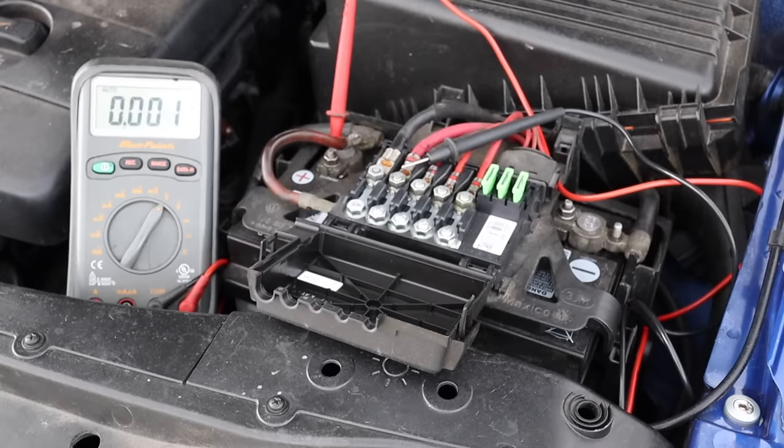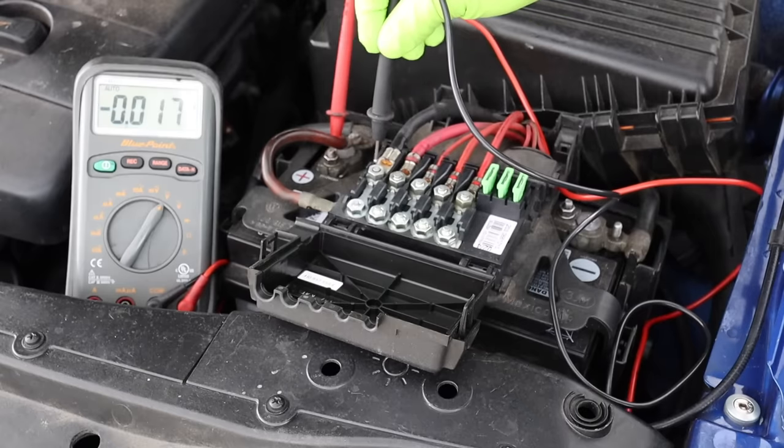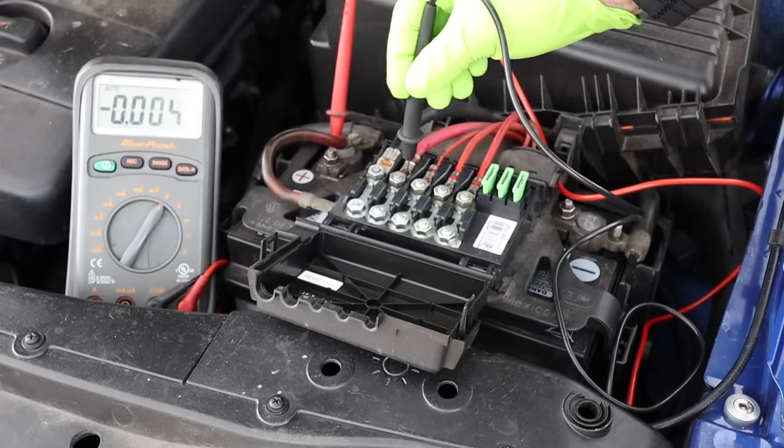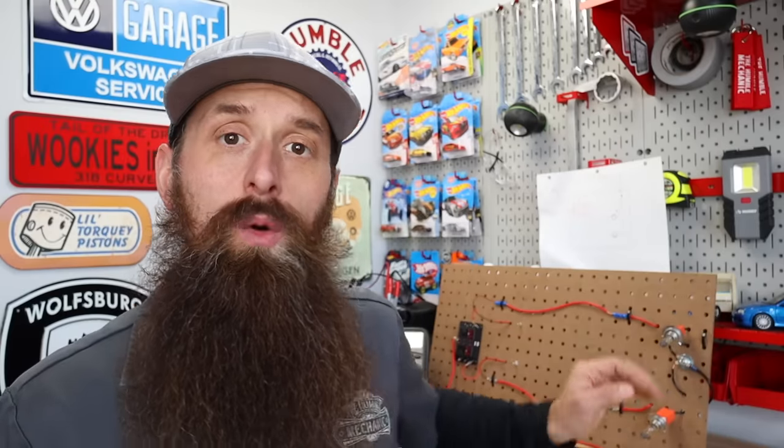What we really want to do is we want to be testing these circuits how they're operating or more likely how they're not operating and test it with the component on dynamically. So when we look at resistance of this wire, we're checking it with the light off and the wire unplugged.